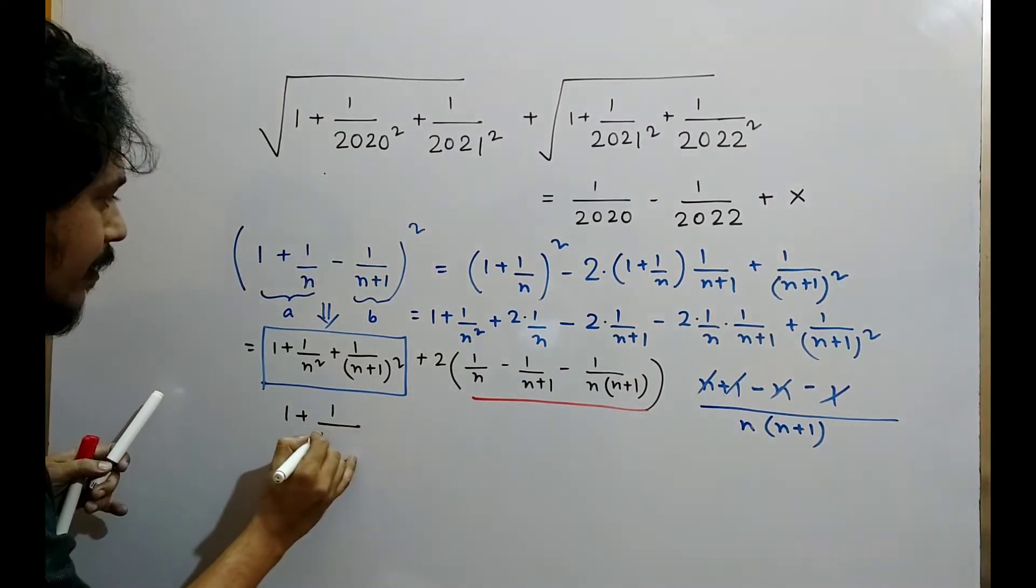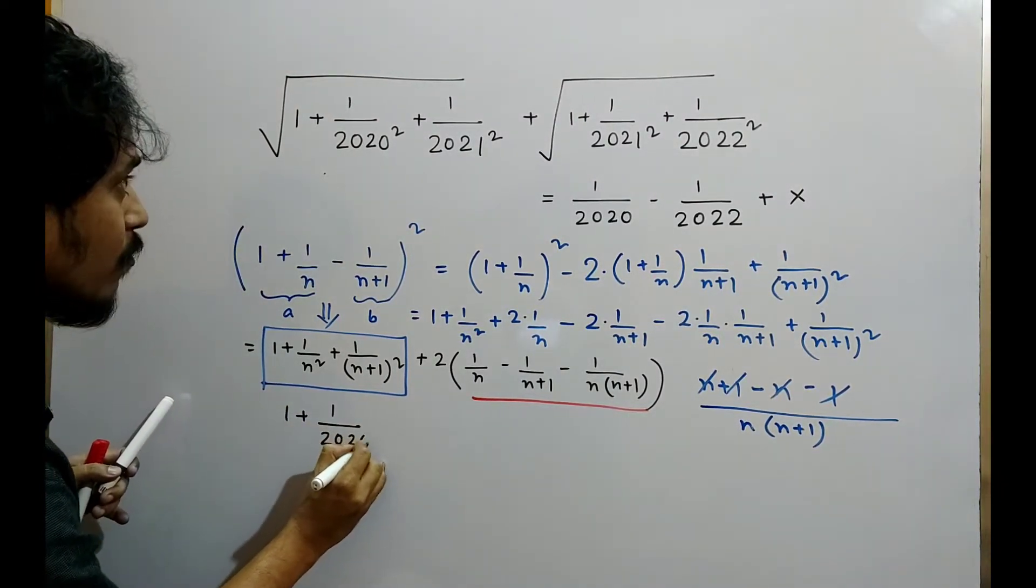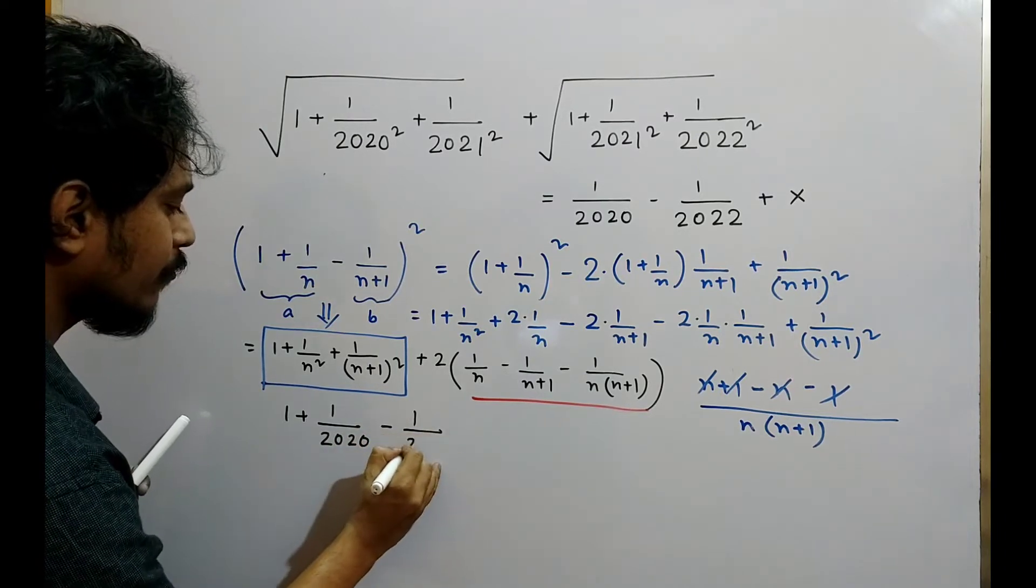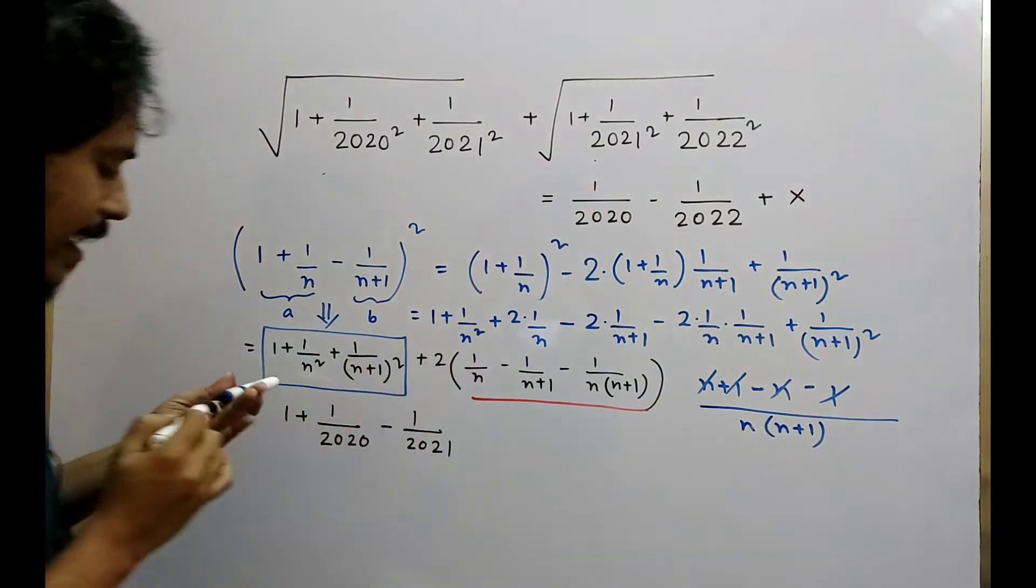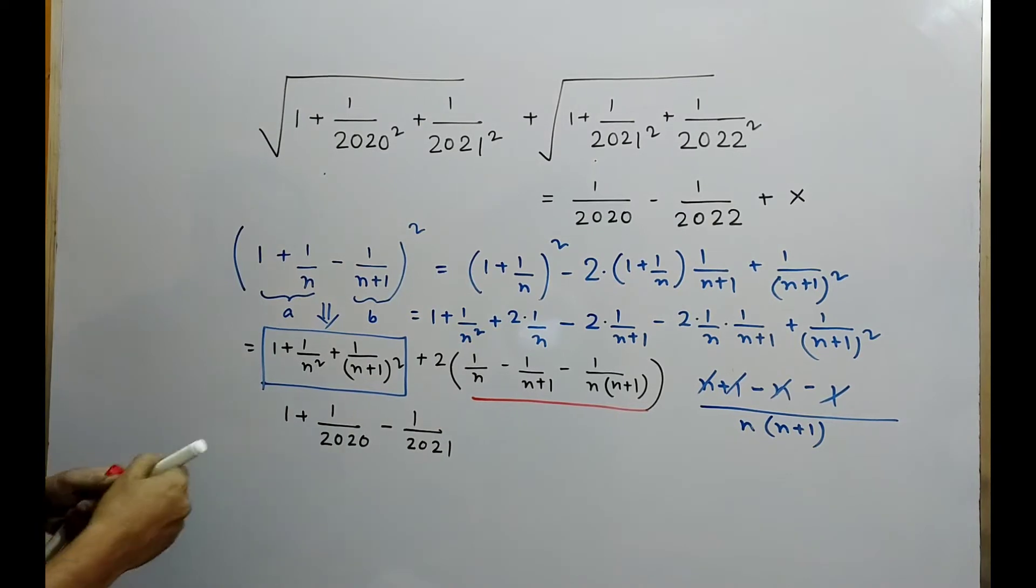The result is n plus 1 by 2020 minus 1 by 2021. Similarly, the result is n plus 1 by 2021 minus 1 by 2022.